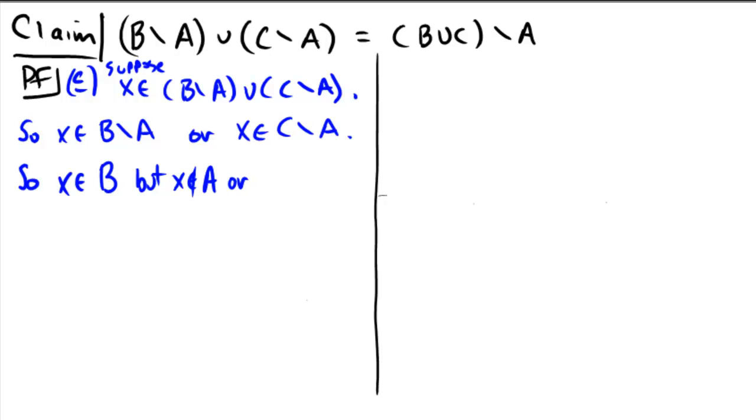Or on the other hand, from the right hand side of the or, you'd have to have that x is in c, but x is not in a. Okay, so what do we have overall? In both cases, we have that x is not in a. So no matter what, x is not in a. Even though it's an or, both sides of the or have that statement.